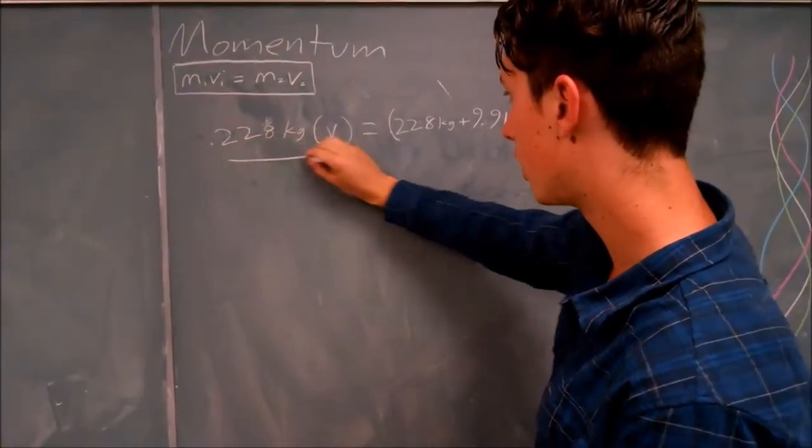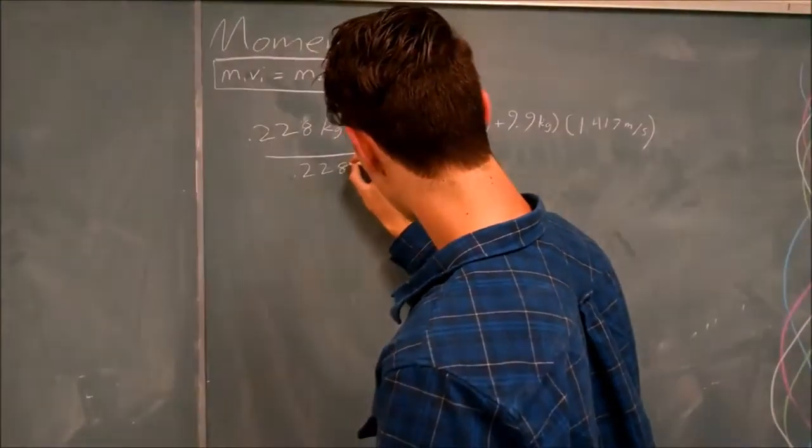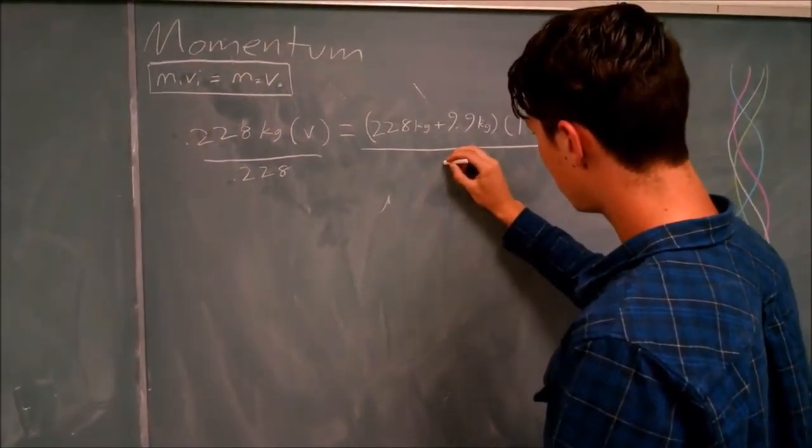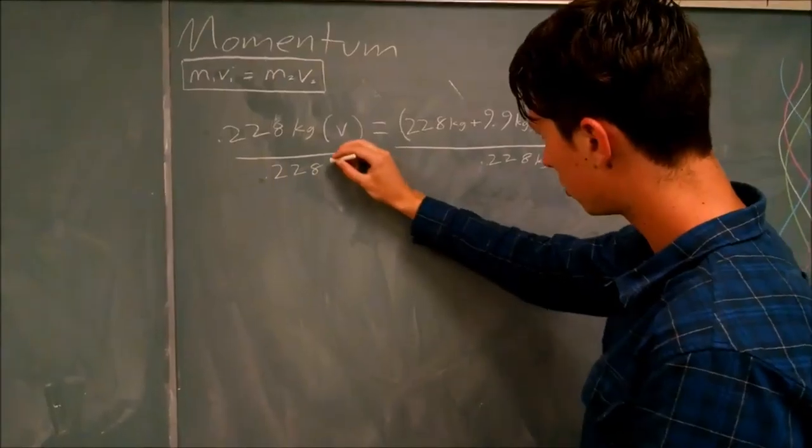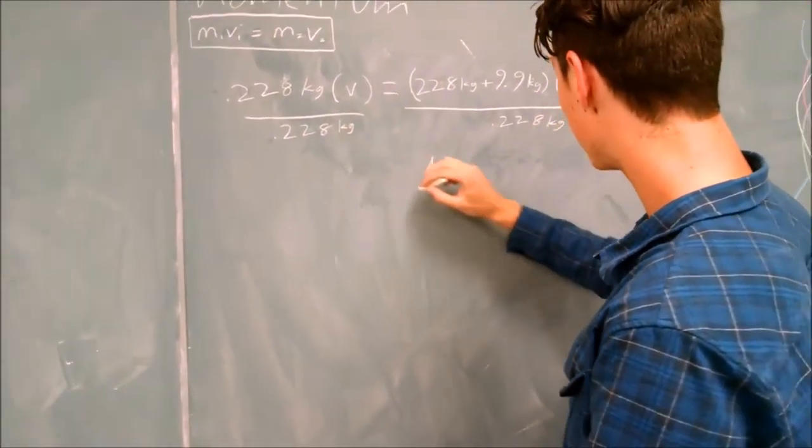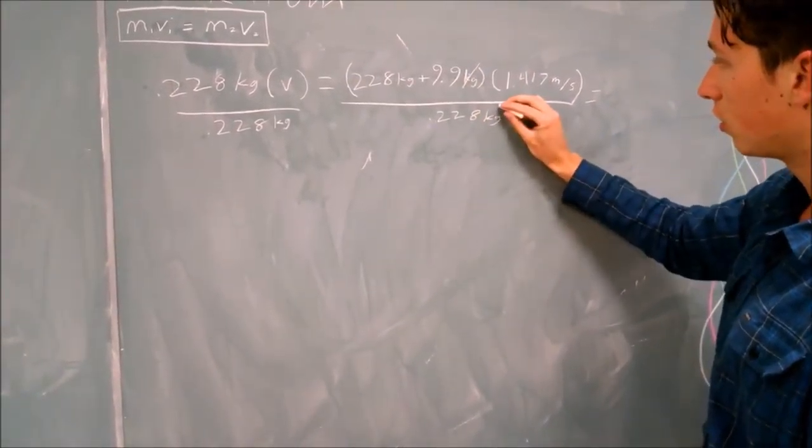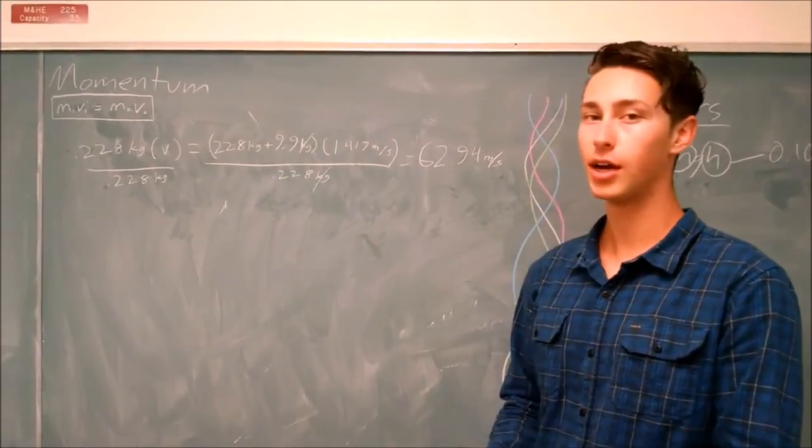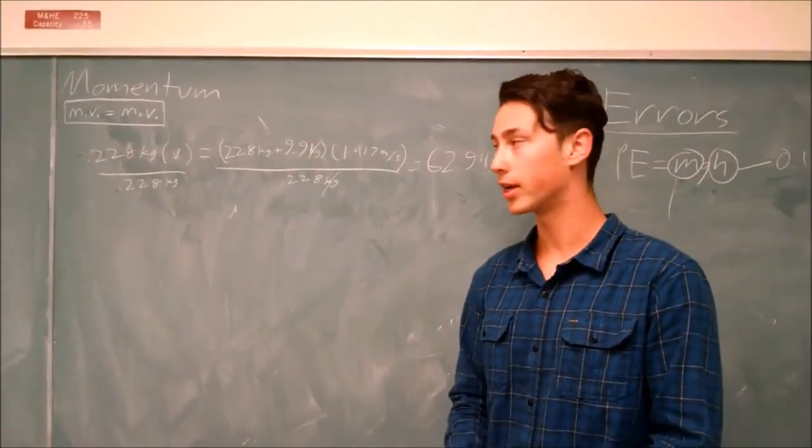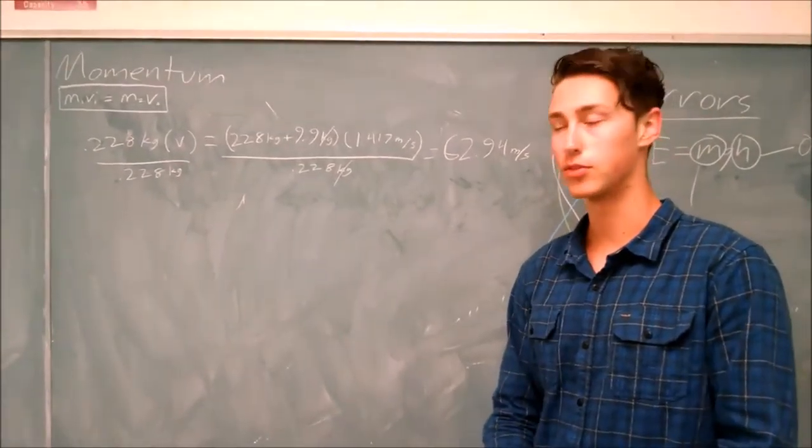So all we've got to do is divide out the 0.228 here, and you'll find that we end up with, once the mass cancels, I know what you're thinking. Great job, guys. That's a really accurate number. I can't believe you did that. Now we know the exact speed that your potato comes out of your cannon.